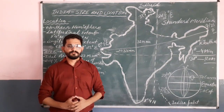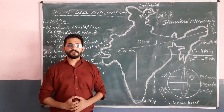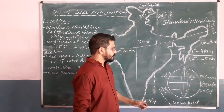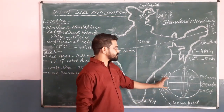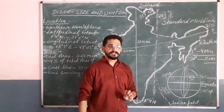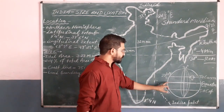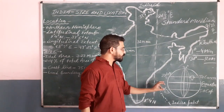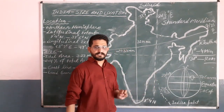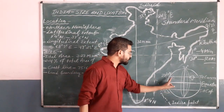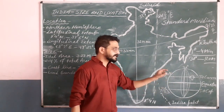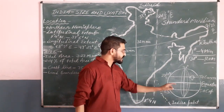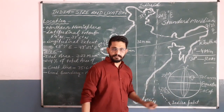First of all we will see the location of India on the globe. Here is the picture of the globe and as we know there are three imaginary lines on the earth. The Equator is at the very centre and it divides the earth into two equal parts. Then we have the Tropic of Cancer on the northern side of the equator and on the southern side of the equator we have the Tropic of Capricorn.